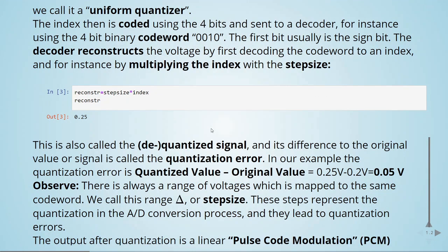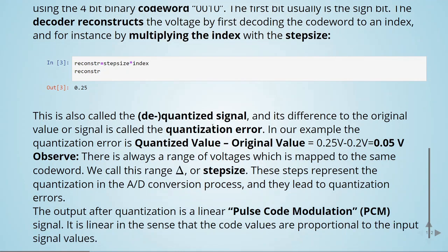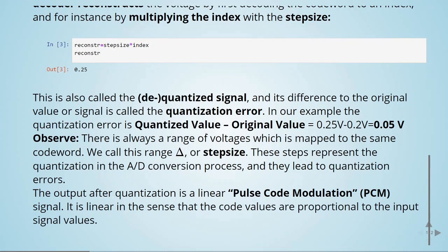In our example, the quantization error is the quantized value minus the original value, so it's 0.05 volts. There will always be a range of voltages which are mapped to the same code word. These ranges are step size. These steps represent the quantization in the analog to digital conversion process and they lead to quantization errors.